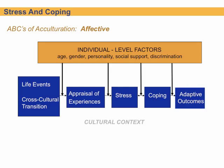Here we'll delve a little deeper on the Affective area of stress and coping, introduced earlier in the ABCs of acculturation. We'll look at the different level factors — age, gender, personality, social support, discrimination — all of which will be a factor in how we cope with stress within a cultural context, and then seeing those adaptive outcomes at the end.